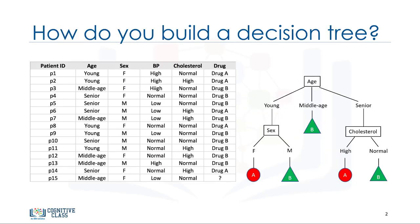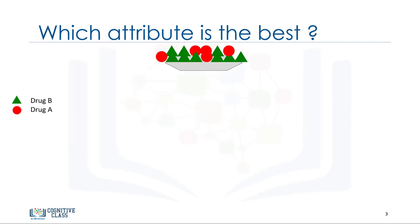Consider the drug dataset again. The question is, how do we build a decision tree based on that dataset? Decision trees are built using recursive partitioning to classify the data. With 14 patients in our dataset, the algorithm chooses the most predictive feature to split the data on. What is important is to determine which attribute is the best or most predictive to split data based on.